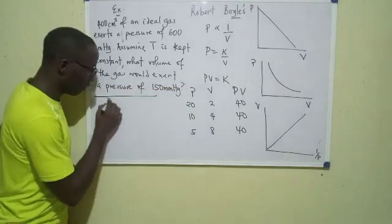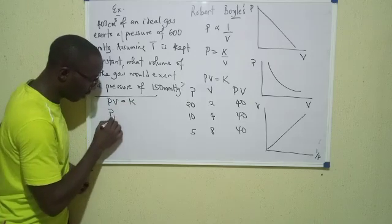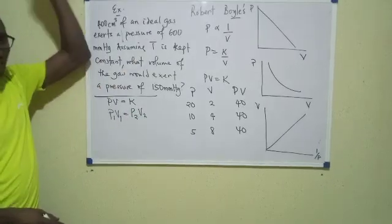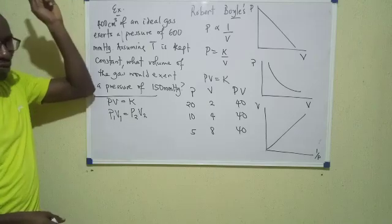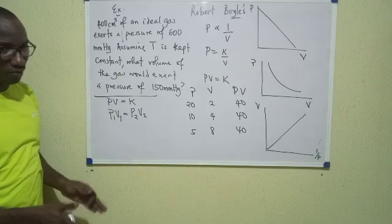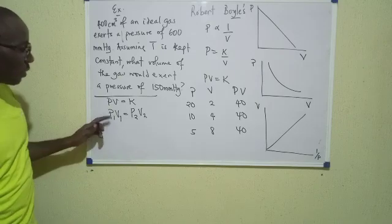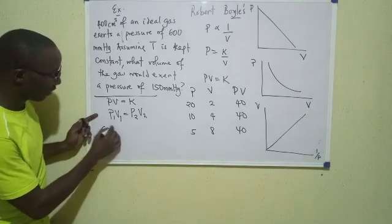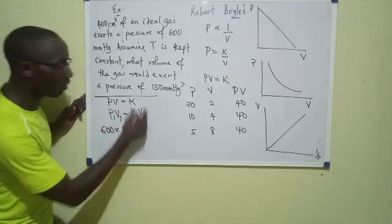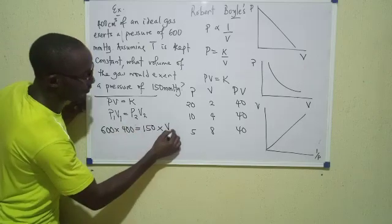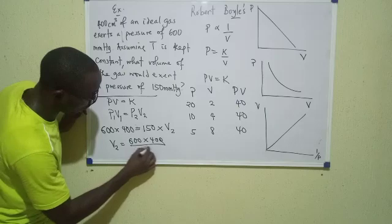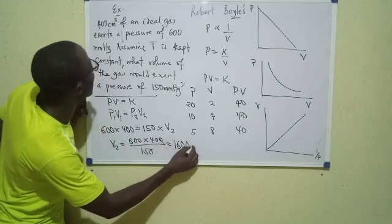So I write PV equals K, which means P₁V₁ equals P₂V₂. P₁ is the initial pressure, V₁ is the initial volume, P₂ is the final pressure, and V₂ is the new volume. So: P₁ = 600, V₁ = 400, P₂ = 150, and we solve for V₂. That gives V₂ equals 600 times 400 over 150, which equals 1,600 cm³.